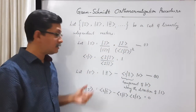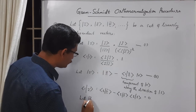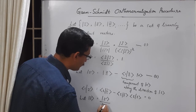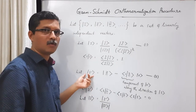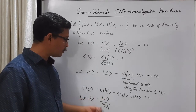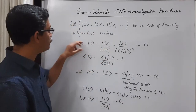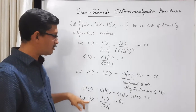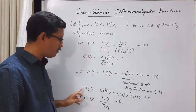Ket |2'⟩ is not yet normalized, so we normalize it: ket |2⟩ equals ket |2'⟩ divided by the modulus of ket |2'⟩. The modulus is obtained by taking the inner product of |2'⟩ with itself and taking the square root. Then dividing ket |2'⟩ by its modulus gives the normalized vector. So ket |1⟩ and ket |2⟩ are mutually orthonormal — each is normalized and they are orthogonal to each other.